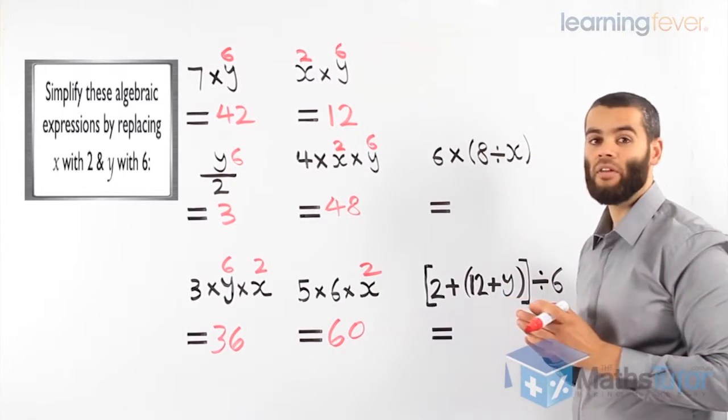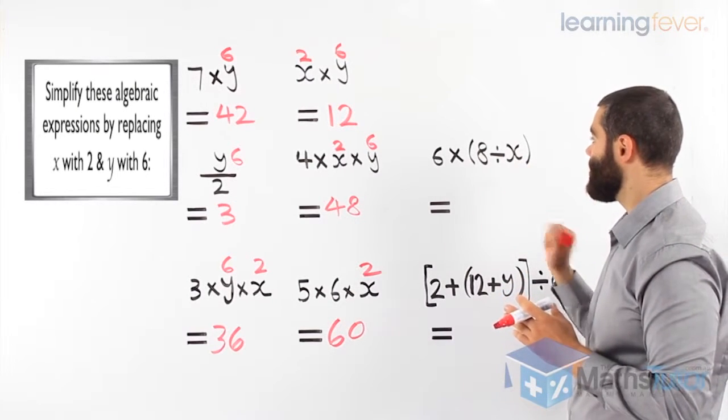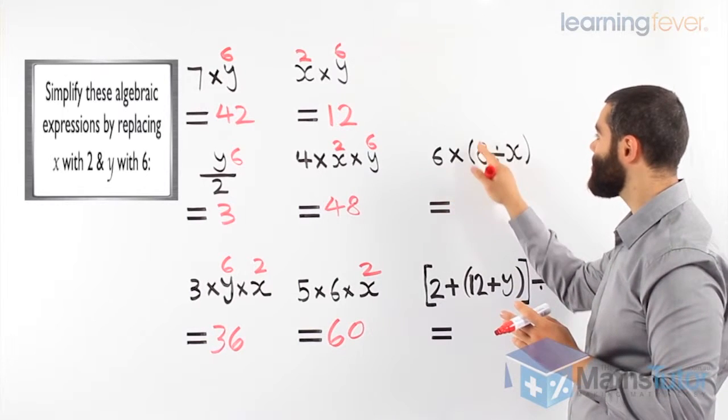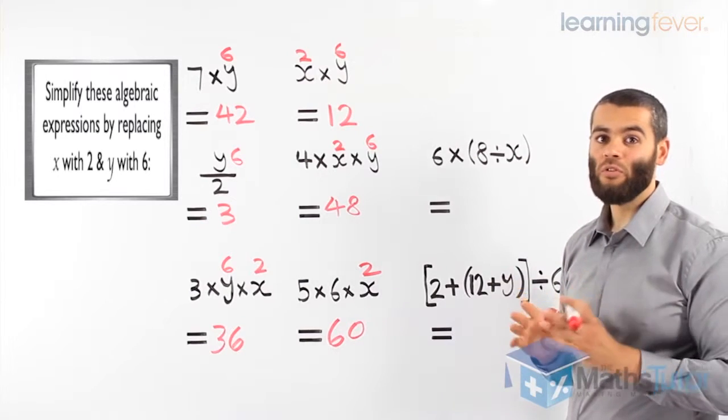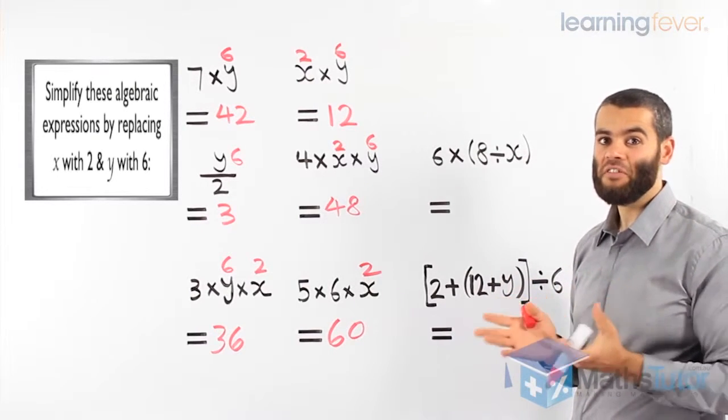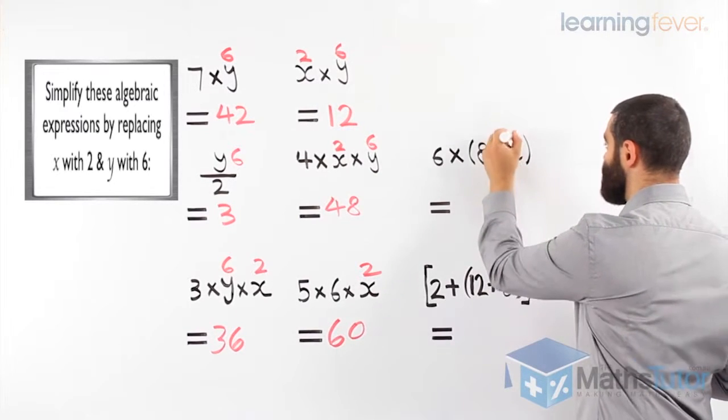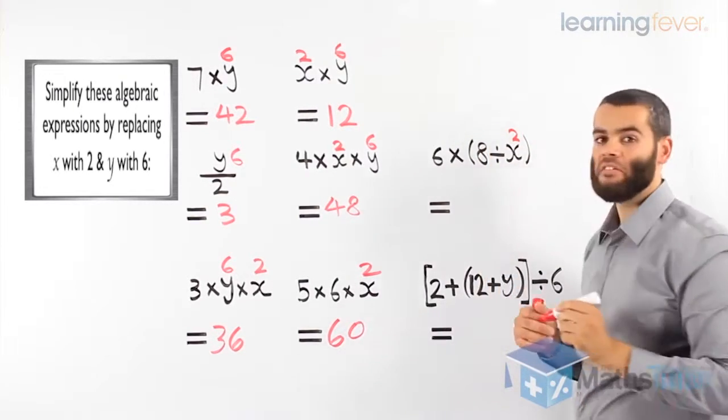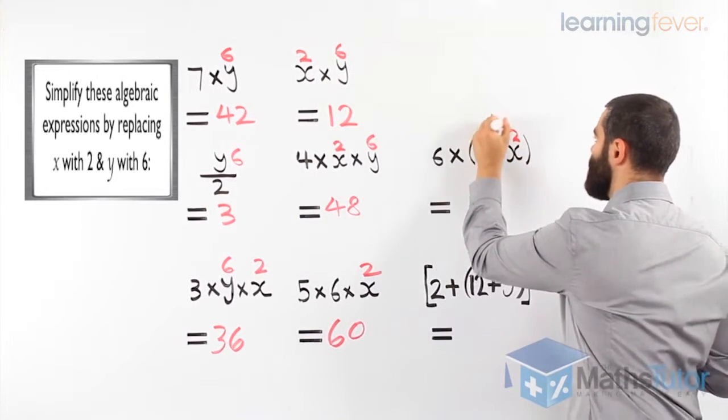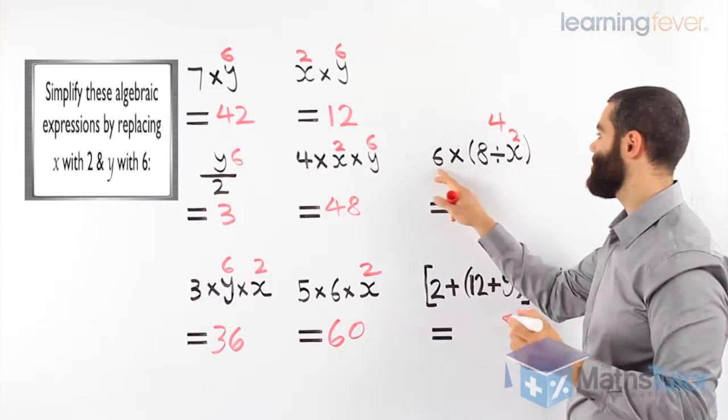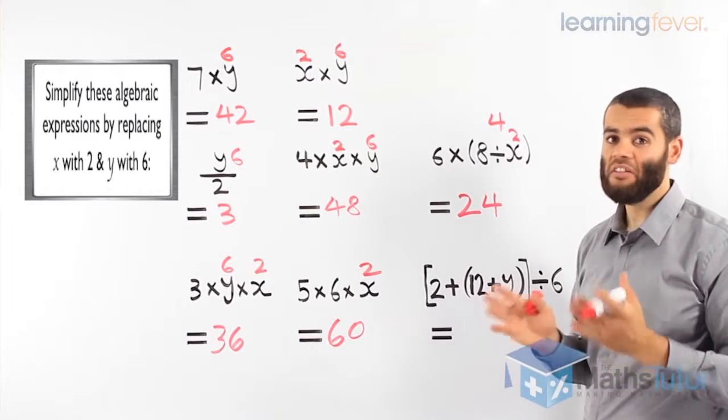Here, we have another algebraic expression. We can tell. We have an x. It says 6 times brackets 8 divided by x, close bracket. Now we know we have to use the order of operations, which says you have to do brackets first. So, after we substitute, we know that this is 2. So, we've now substituted. We've replaced x with a 2. 8 divided by 2 is 4. And then, 6 times 4 is 24. It is that easy, guys.